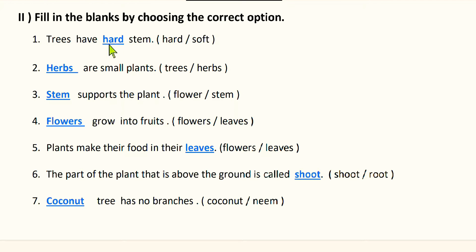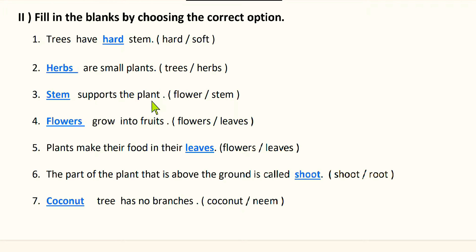Next: blank are small plants. The options are trees and herbs. Trees are big plants; herbs are small plants. So the right option is herbs. Next: blank supports the plant. What supports the plant — flower or stem? Stem supports the plant. Stem helps the plant to stand straight, so stem supports the plant.